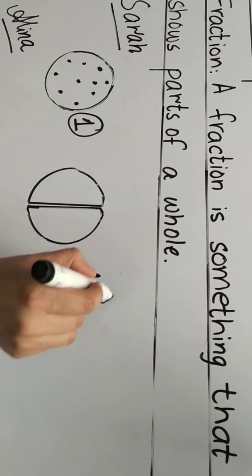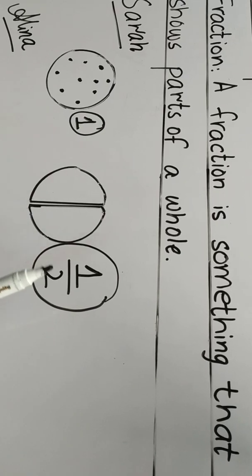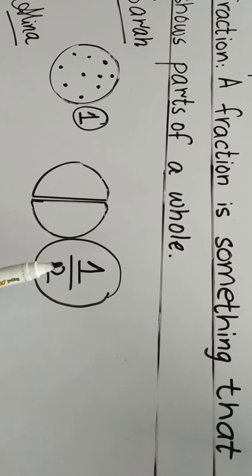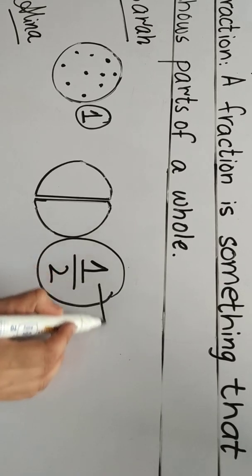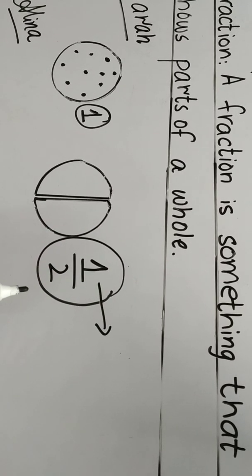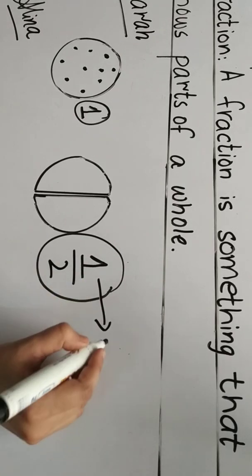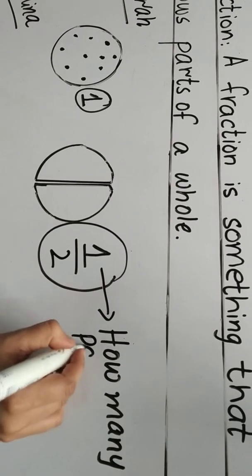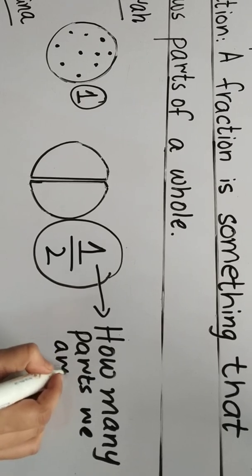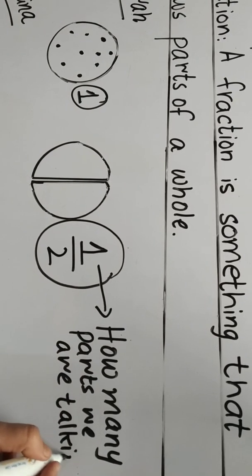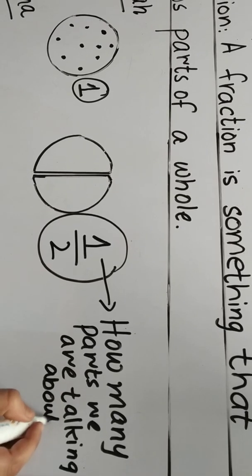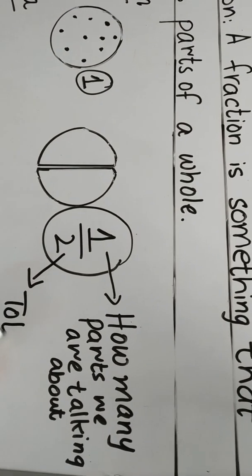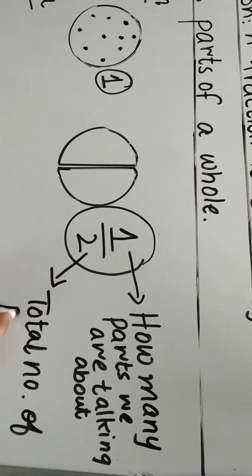We will write it as a fraction like this: one by two. It's a very important fraction and we use it all the time. This upper one shows how many parts we are talking about, and this two shows the total number of parts.